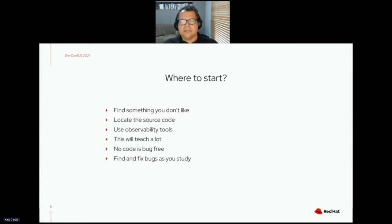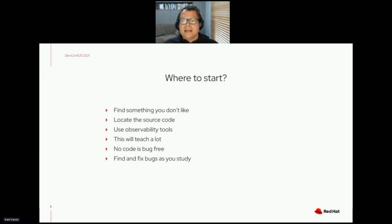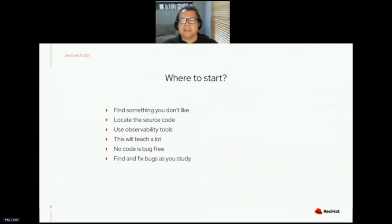After that, you should try to locate the source code in the usual places — Google, GitHub — and then look at the source code. If you know the specific language that is used to implement the project, then you can already start to find where the thing you want to fix is implemented.